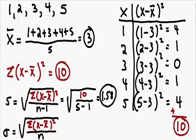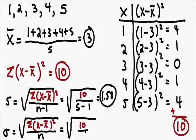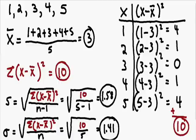Now let's assume these five numbers represent an entire population. We use the population formula: the square root of the summation of (x minus x̄) squared — which we know is 10 — divided by n, which is 5. Plugging that into a calculator and rounding to two decimal points, we get approximately 1.41. So if these five numbers represented an entire population, the standard deviation would be 1.41.